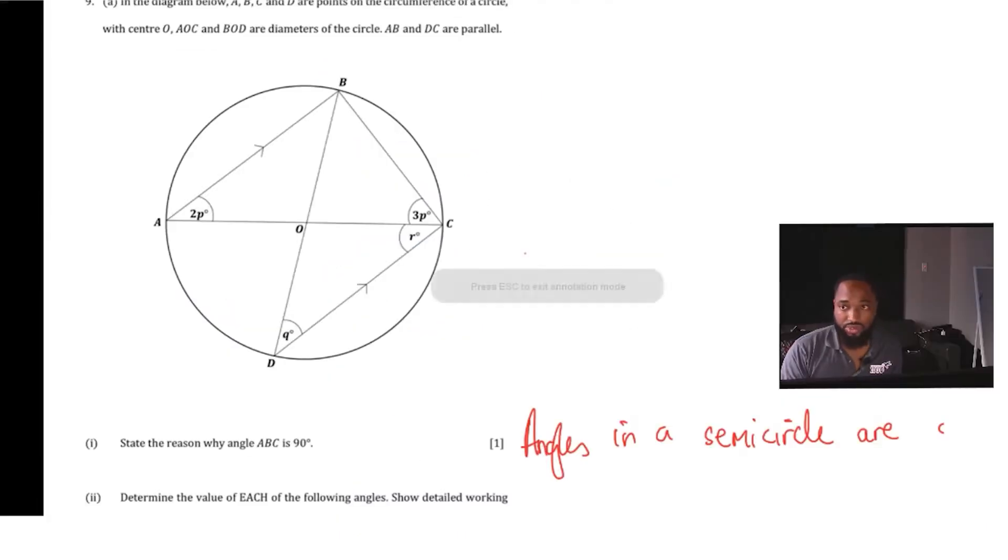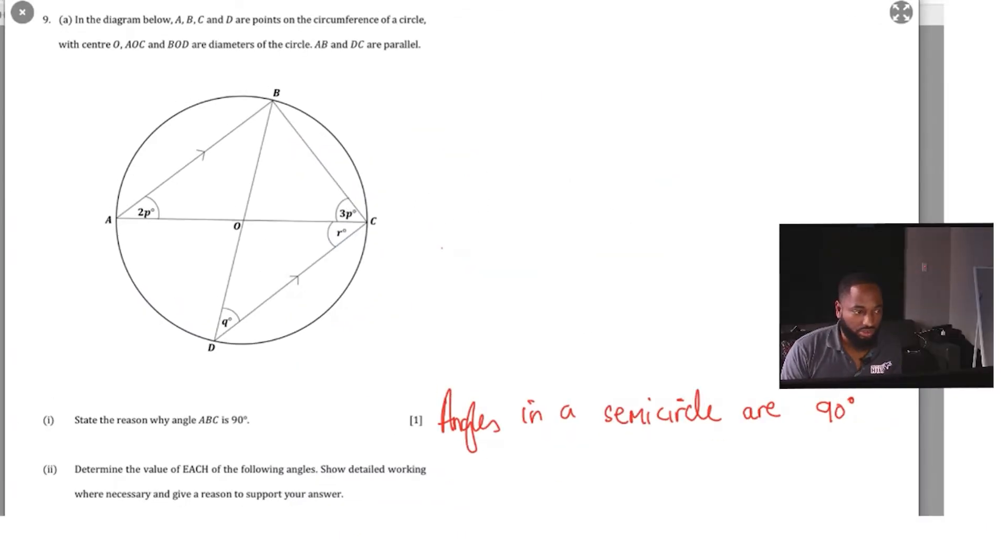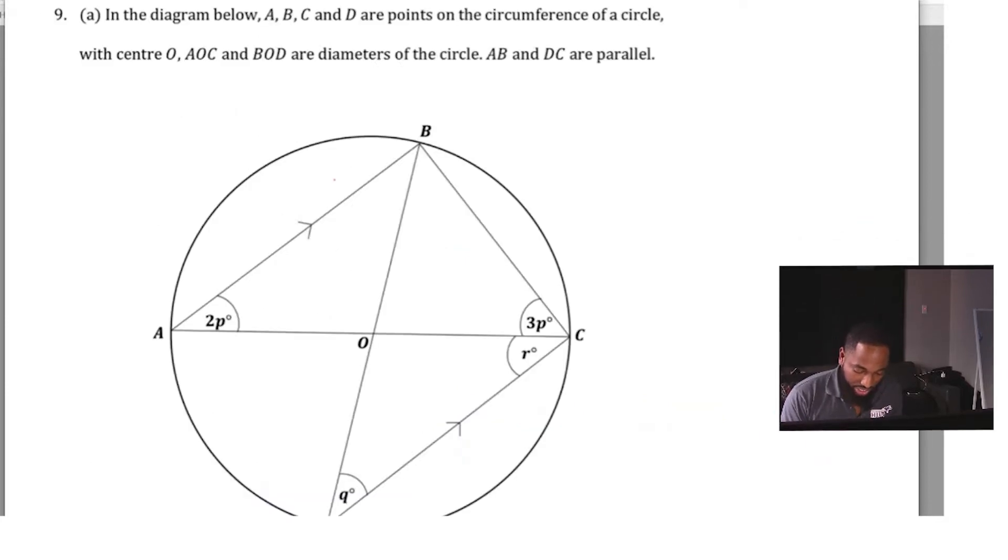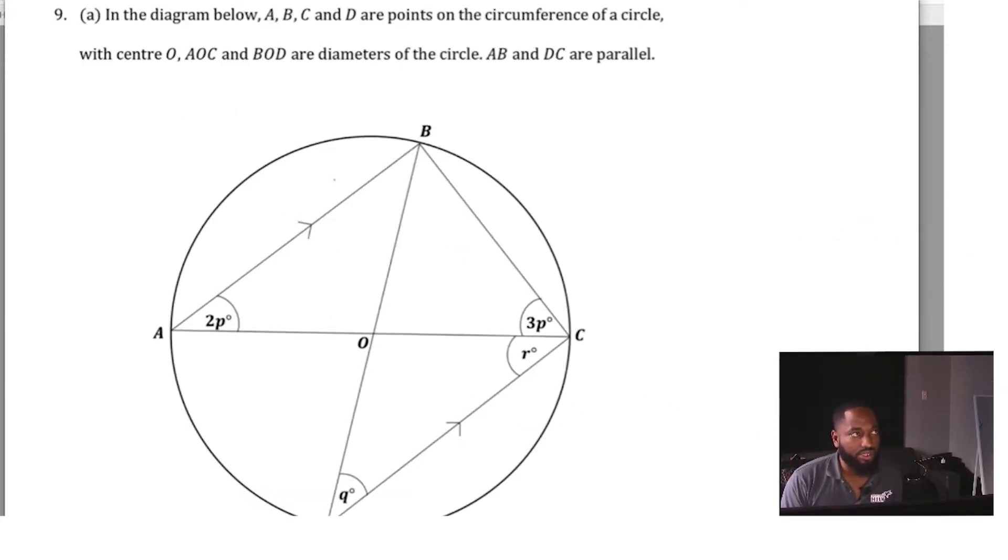Let's go on to the next one: determine the value of each of the following angles. The first one they want is angle BAC. So let's go to my larger diagram. How do we find angle BAC? As I look here, I see this 2p, and as I look across here I see 3p. That indicates to me that if this is 90 degrees, then these remaining two angles must add up to 90 degrees as well because this is a triangle.